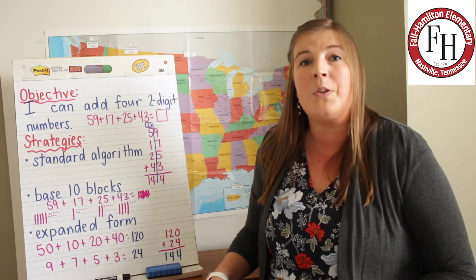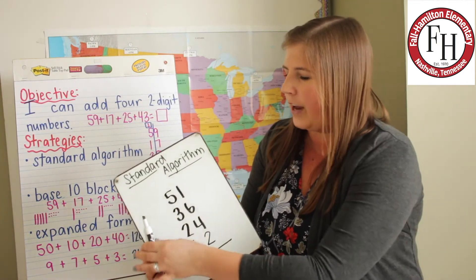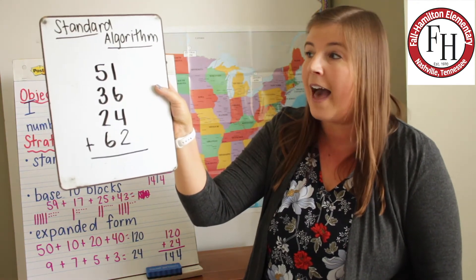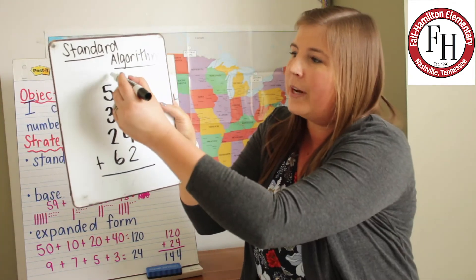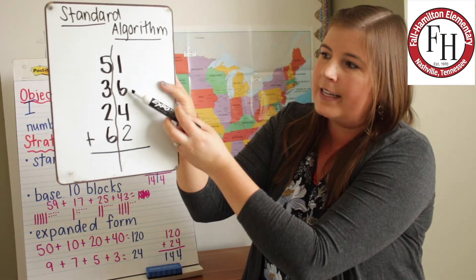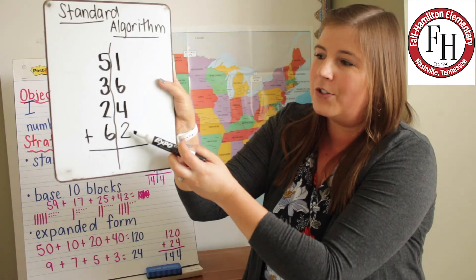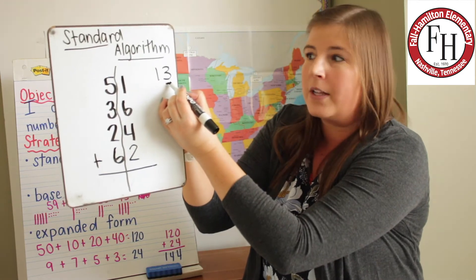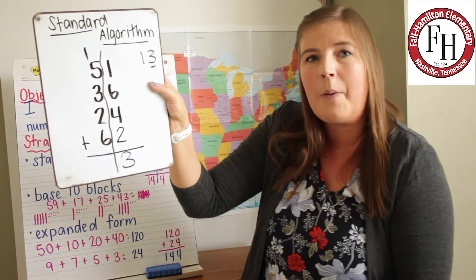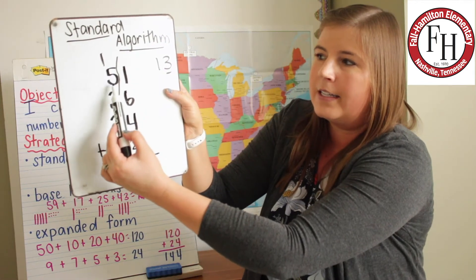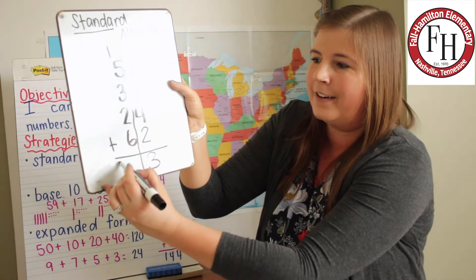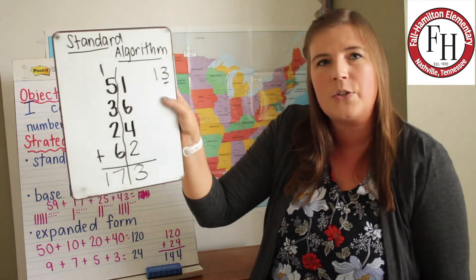So now I'm going to show you one more problem using each of these strategies. First, using the standard algorithm, I have the problem 51 plus 36 plus 24 plus 62. I've written my numbers vertically and I'm going to draw a line between the tens and the ones to help keep them separate. Now I'm going to add up my ones: one plus six is seven, seven plus four is 11, eleven plus two is 13. My number 13 has a three in the ones place and a one in the tens place, so I put my three in the ones place and carry my one to the tens place. Now I need to add my tens: one plus five is six, six plus three is nine, nine plus two is 11, and 11 plus six is 17. One hundred seventy-three is my total. So this is using the standard algorithm.